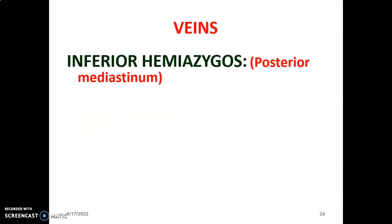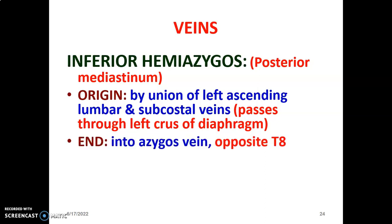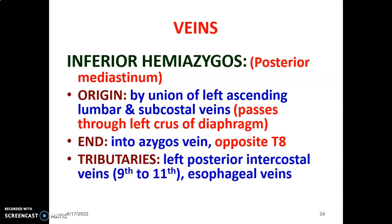The hemiazygos is divided into inferior and superior. The inferior hemiazygos originates from the union of the left ascending lumbar and subcostal veins. It passes through the left crus of the diaphragm and terminates into the azygos vein opposite the T8 vertebra. The tributaries of the inferior hemiazygos include the left posterior intercostal veins from the ninth to eleventh intercostal spaces, as well as esophageal veins.